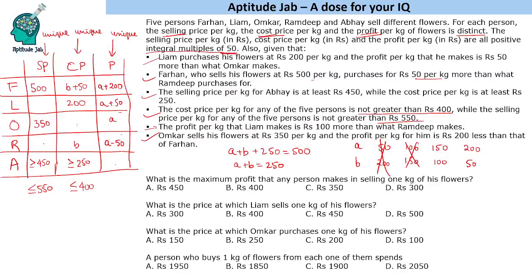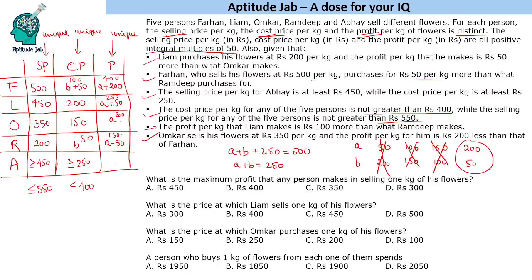If A equals 150, two values become the same — not allowed. So the only valid case is A equals 200 and B equals 50. Checking: Liam's profit is 250, selling price 450 — fine. Farhan's profit is 400, cost price 100 — fine. Ramdeep's profit is 150, cost price 50 — all values unique and satisfying all criteria.